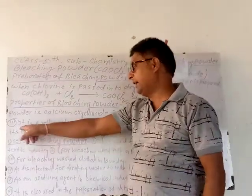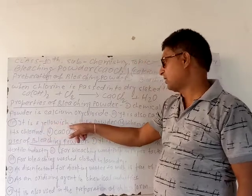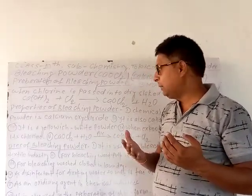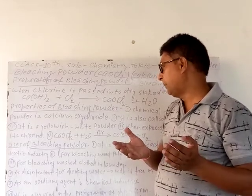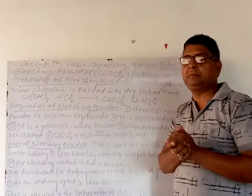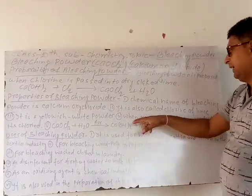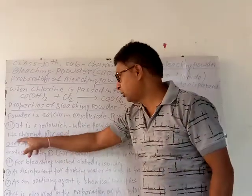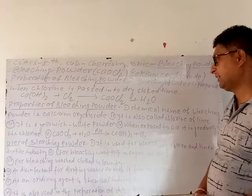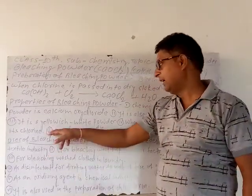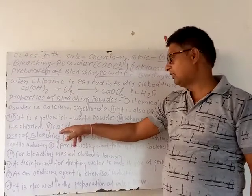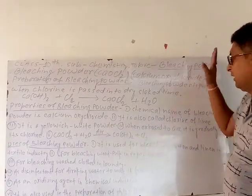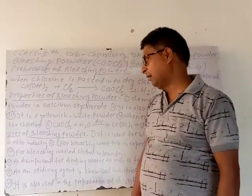Next point: it is a yellowish-white powder. Bleaching Powder is a yellowish-white powder. Next point: when exposed to air or water, it loses chlorine. Calcium Oxychloride reacts with water and in the presence of acid (calcium hydroxide context), it releases chlorine.